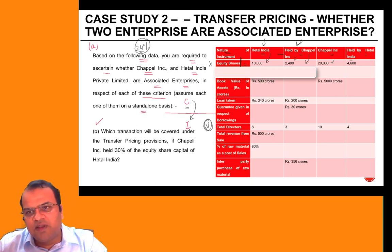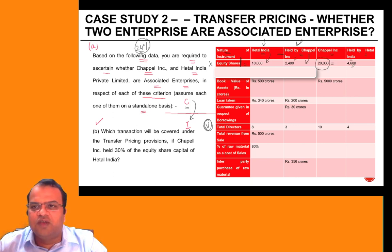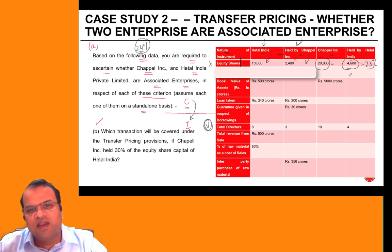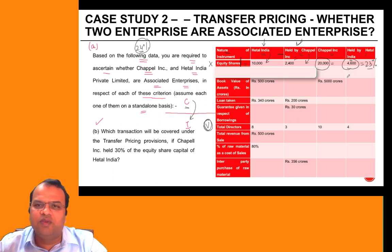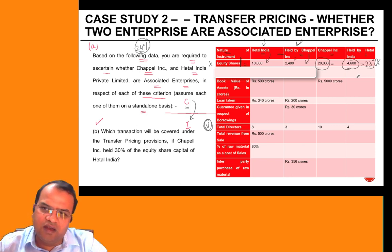Looking at Chapel Link, the total share capital is 20,000, out of which 4,600 is held by Hathal India, which is 23%. Again, because this is less than the prescribed shareholding threshold, they will not qualify as a related enterprise under this criteria either.